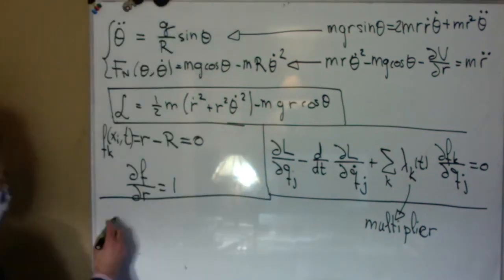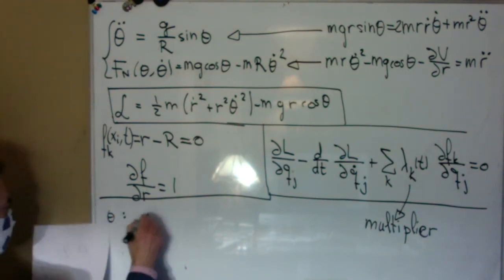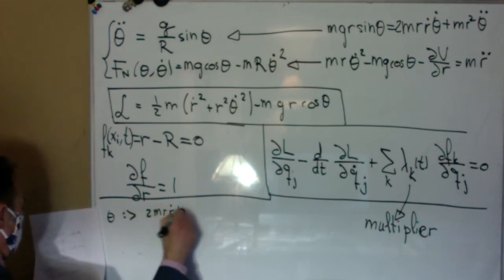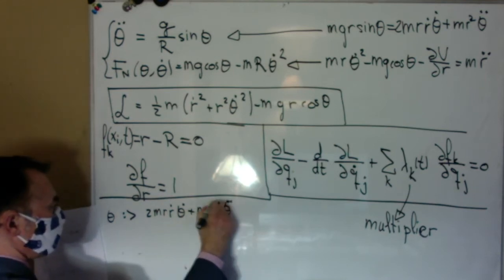From Lagrange equations with multipliers applied to theta, there is no multiplier term here as the constraint does not depend on theta. Solving this equation gives this differential equation. I did just this a couple of videos ago.